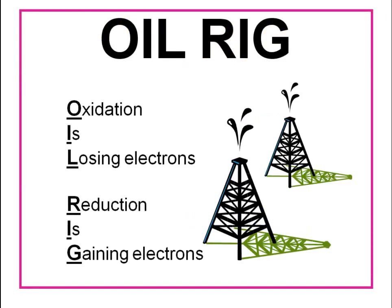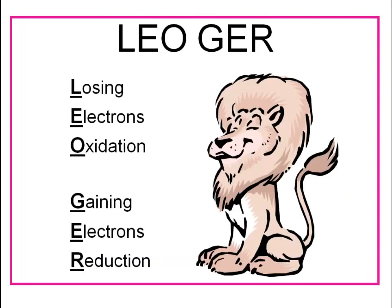There are two little mnemonics you can use to keep straight what oxidation and reduction is. First, you can use OIL RIG, which stands for oxidation is losing electrons, reduction is gaining electrons. Or you can use LEO GER, where LEO stands for losing electrons oxidation and GER is gaining electrons reduction.